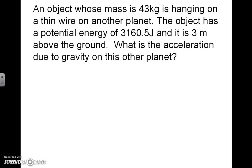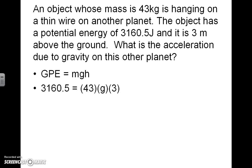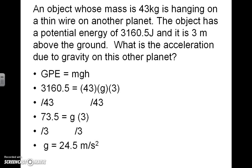I switched up a previous problem to solve for a different variable. An object whose mass is 43 kilograms is hanging on a thin wire on another planet. The object has a potential energy of 3,160.5 joules and it's 3 meters above the ground. What is the acceleration due to gravity on this other planet? Using the GPE formula and substitutions, leaving gravity as the variable, I divide both sides by 43, then by 3, and find the acceleration due to gravity on this other planet is 24.5 meters per second squared — a much more massive planet than Earth.